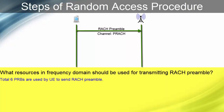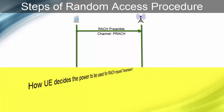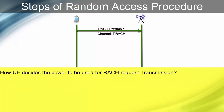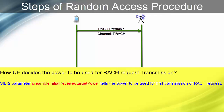Total 6 PRBs are used by UE to send PRACH preamble, and this number is fixed. Parameter 'PRACH frequency offset' of SIB2 tells us the mapping of these 6 PRBs in the resource grid. For example, if the value of PRACH frequency offset is 10, UE can use 6 PRBs starting from PRB 10 for RACH request. SIB2 parameter 'preamble initial receive target power' tells us the power to be used for the first transmission of RACH request, and its value varies from minus 120 dBm to minus 90 dBm.